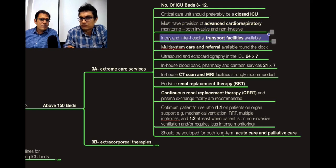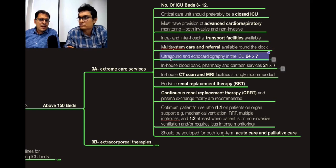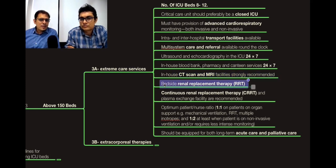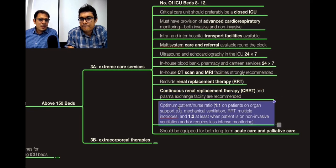Intra-hospital and inter-hospital transport facilities should be available, with multi-system care referrals around the clock. Super-specialty consultants should be on your panel and available for emergencies. Ultrasound and echo should be available 24/7 inside the ICU. Blood bank, pharmacy, and canteen should be available 24/7 within the hospital. In a 150-bed hospital, CT and MRI should be in-house, and basic RRT as well as CRRT and plasma exchange must be available. The nurse-to-patient ratio should be at least 1:1 — do not compromise on this.